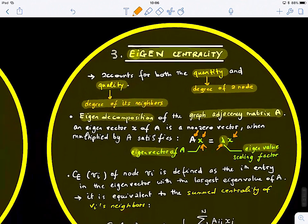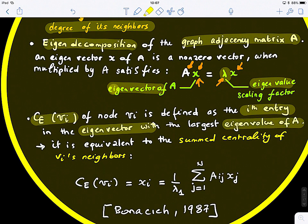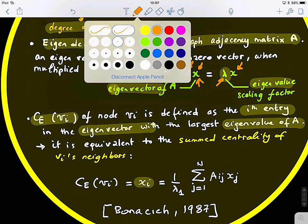We define the eigencentrality CE of a node vi as the i-th entry in the eigenvector with the largest eigenvalue of A. What we do is decompose matrix A, find its eigenvectors and eigenvalues, take the eigenvector with the highest eigenvalue that has positive elements, and then take the i-th element in eigenvector x.